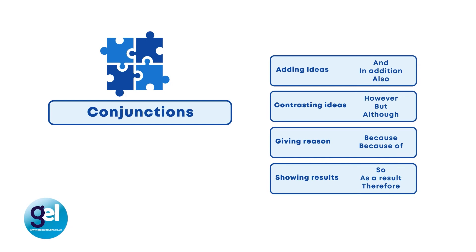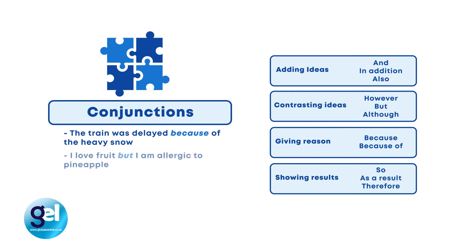Let's look at some further examples. The train was delayed because of the heavy snow — this is giving a reason why the train was delayed. I love fruit but I'm allergic to pineapple — this is contrasting ideas. They went for a run, although it was a foggy day — also contrasting ideas. With conjunctions, it's really useful to categorise them as we've just done. This helps students to remember them and how to use them appropriately, and it also offers synonyms so they have more than one linker they can use. A range of linkers will enhance their writing massively.